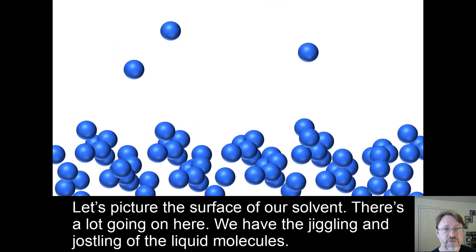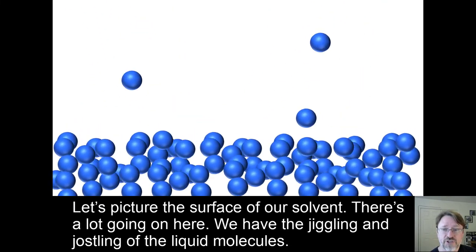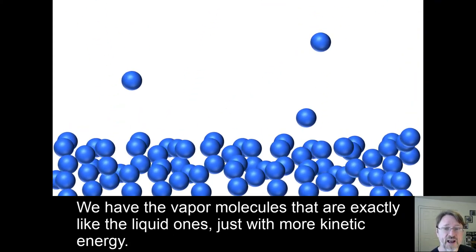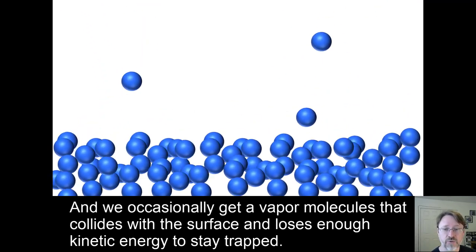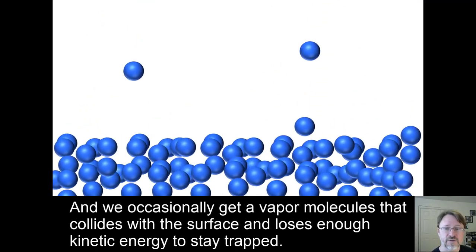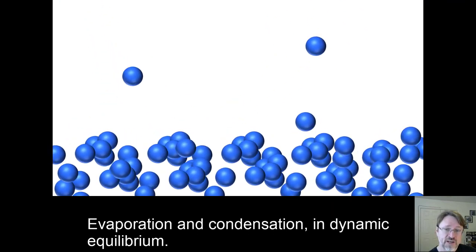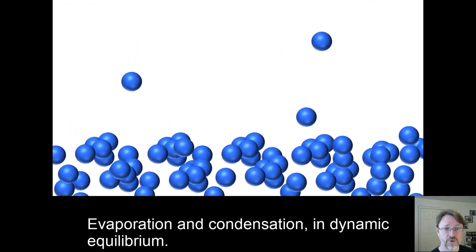Let's picture the surface of our solvent. There's a lot going on here. We have the jiggling and jostling of the liquid molecules. We have the vapor molecules that are exactly like the liquid ones, just with more kinetic energy. We occasionally get a liquid molecule that acquires enough kinetic energy to escape into the gas phase, and we occasionally get a vapor molecule that collides with the surface and loses enough kinetic energy to stay trapped. Evaporation and condensation in dynamic equilibrium.